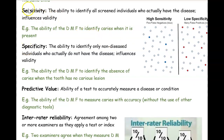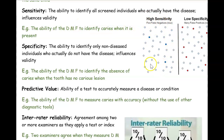Sensitivity refers to how many people an examiner or researcher correctly identifies as actually having the disease. For example, if I did a DMFT score on a group where everyone has cavities, and I only made mistakes with three people — three false negatives — saying they don't have cavities when they actually do,